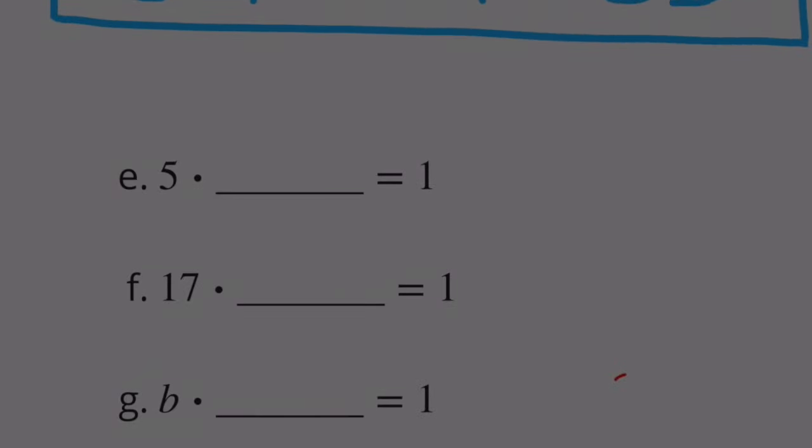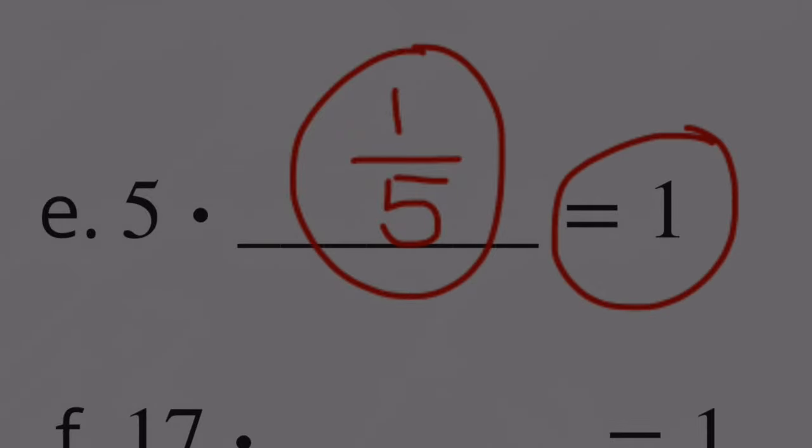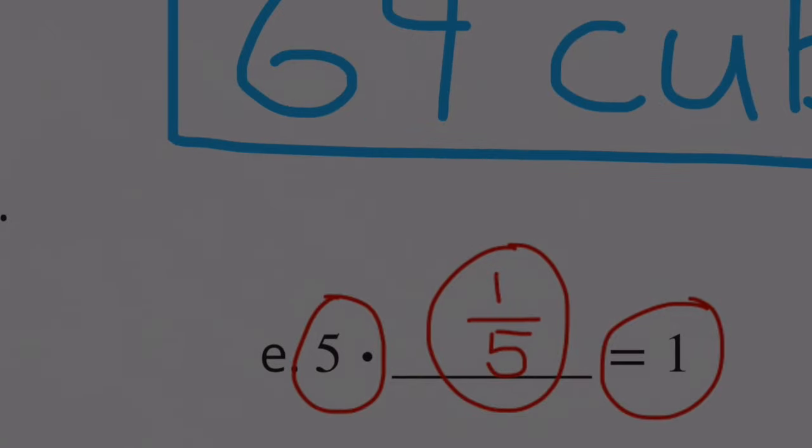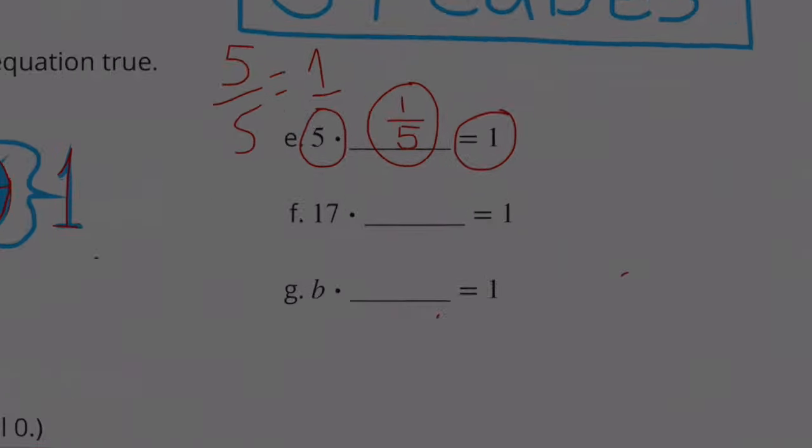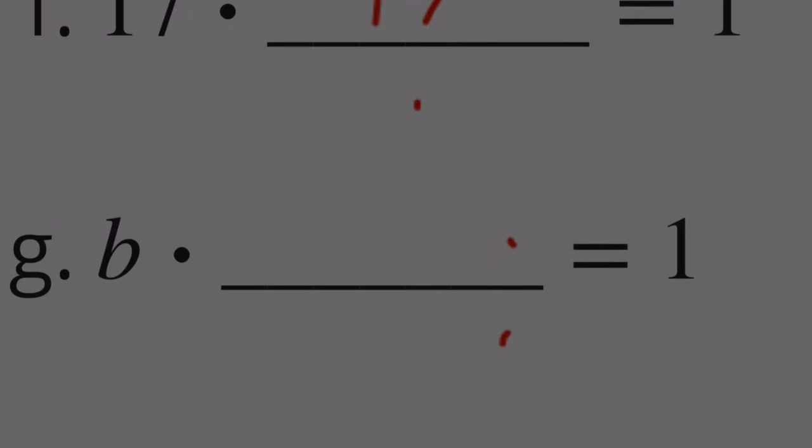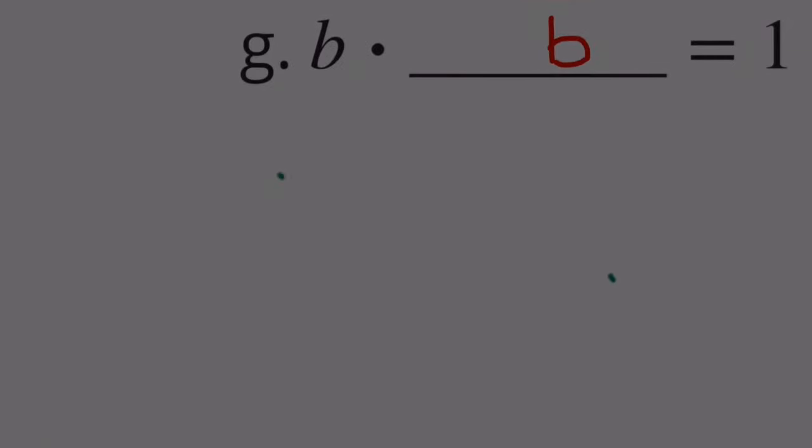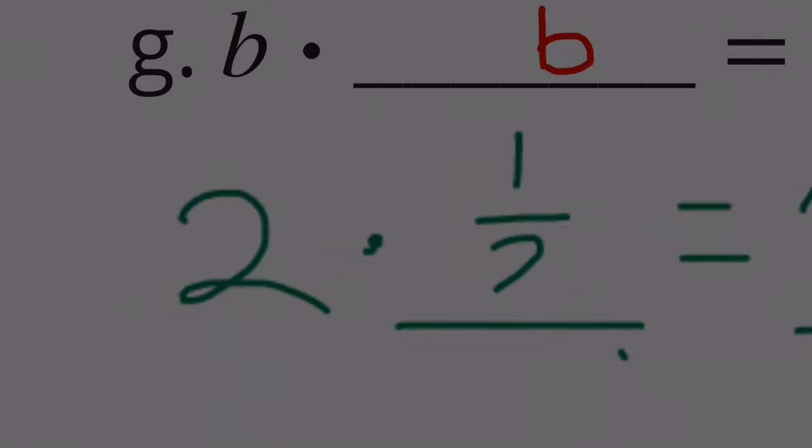Part E: Five times what equals one? Five times one fifth equals one. In other words, how many fifths does it take to equal one? You need five fifths to equal one. 17 times what equals one? 17 times one seventeenth equals one. B times what equals one? B times one over B equals one. If we had one here that said two times what equals one, we know that two halves equals one. When you have two halves, you have one whole. So two times a half equals one.